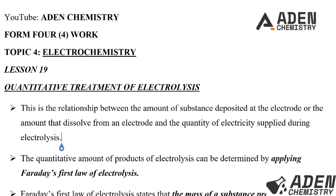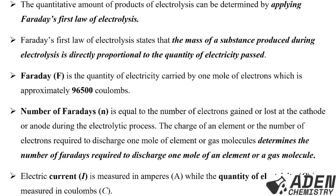Let us see what Faraday's First Law of electrolysis states. It states that the mass of substance produced or formed during electrolysis is directly proportional to the quantity of electricity passed or supplied.